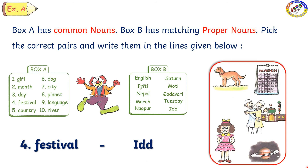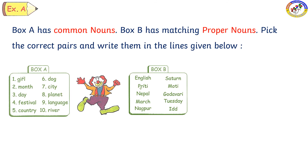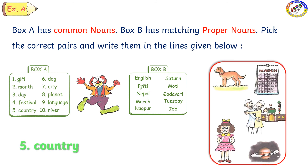Next, let us see one more common noun. Country — ok children, we have to find the country in the box and find the proper noun for country. English, Priti, Nepal — yes. Nepal is a country. So the common noun is country and the proper noun is Nepal.